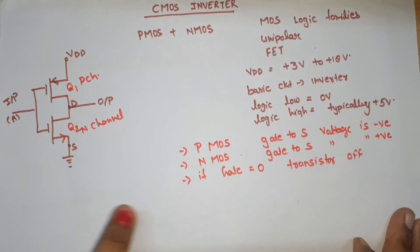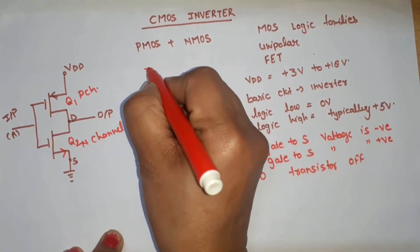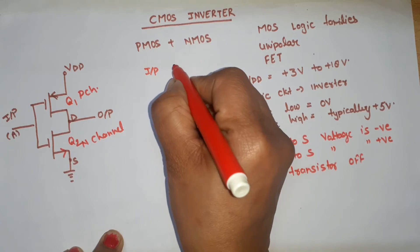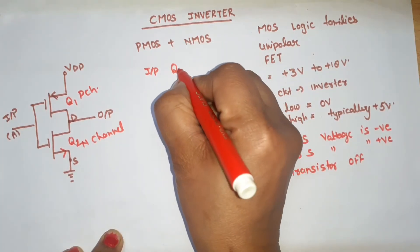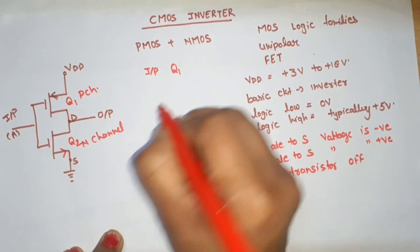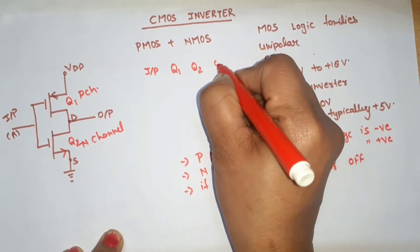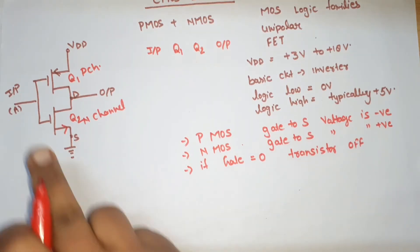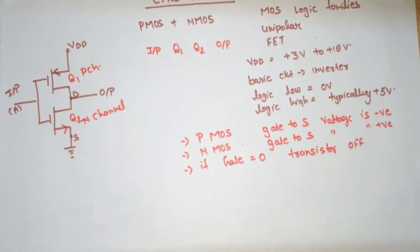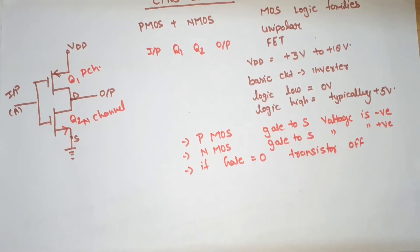Now I will draw a truth table showing: what is the input value, what is the status of Q1 (on or off), what is the status of Q2, and what is the output value. Since we have one input, we will have two cases: input is zero, or input is one.